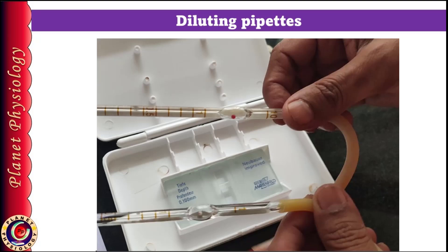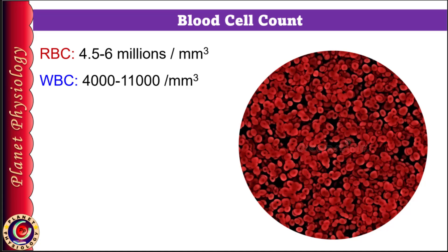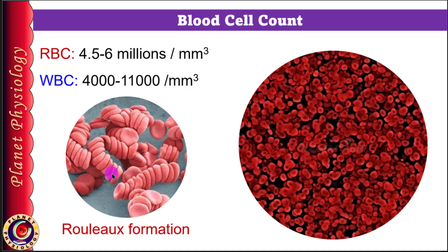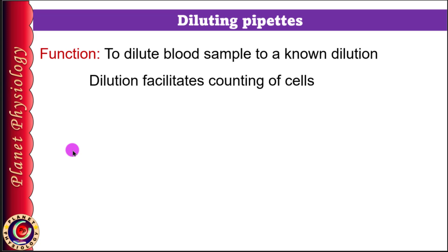In a typical blood sample, there are approximately 4.5 to 6 million RBCs and about 4,000 to 11,000 WBCs per cubic millimeter. These high cell counts make it challenging to observe and count them directly under the microscope. Also, RBCs in whole blood stack on each other to form rouleaux, which further makes cell counting difficult. To address these issues, we dilute the blood sample to a known volume, which reduces the concentration of cells and simplifies counting. Pipettes are essential in this process as they allow us to accurately dilute the blood sample to a specific volume, ensuring reliable and manageable cell counts.